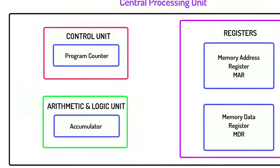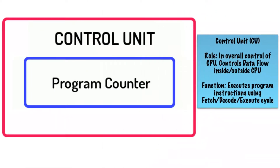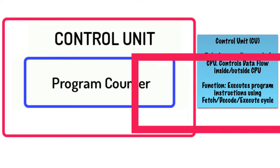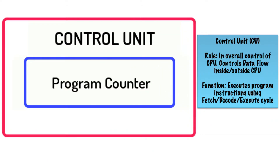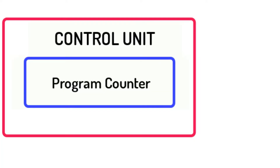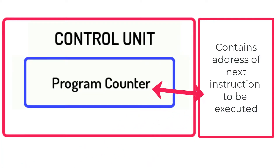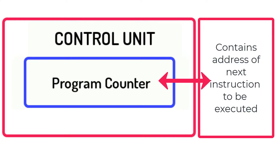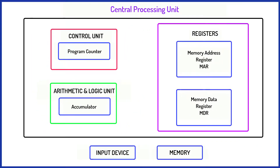Let's get back to the program counter. The CPU needs to perform calculations on data, but it also needs to know where the instructions or data are located — and this is where the PC comes in. The program counter contains the address or location of the next instruction to be executed, basically queuing up the instructions for them to be executed one after another.